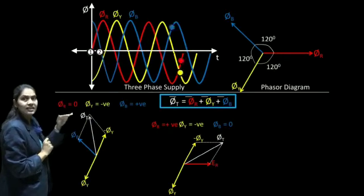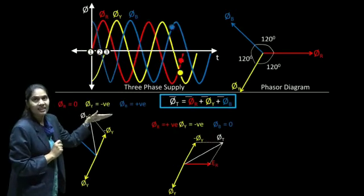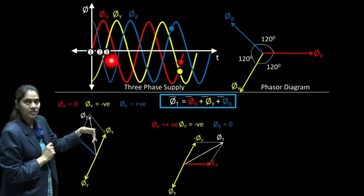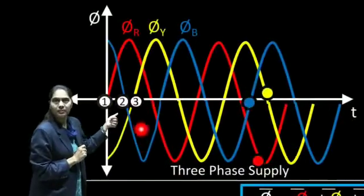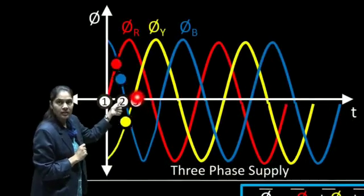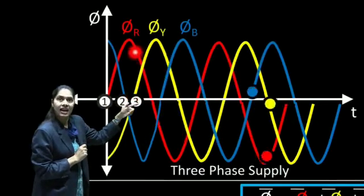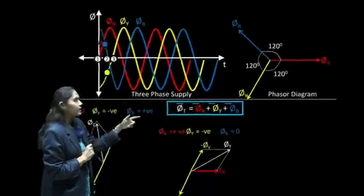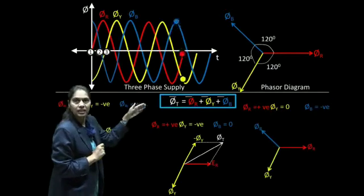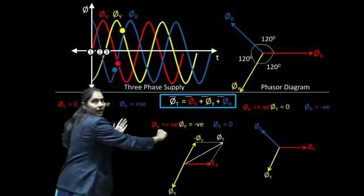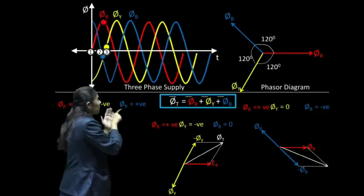We can see that this resultant flux, from position one, has gotten inclined — it is inclined in the clockwise direction. For instant number 3, check φR, φY, φB: φY is 0, φB is negative, and φR is positive. Plot its phasor, remove φY, and plot φB in the negative direction. The resultant again gets inclined further from instant number 2.